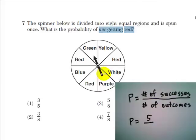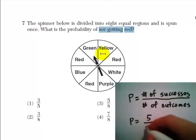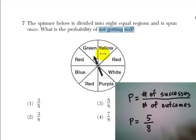Well, how many things could happen? Well, we could land on any of these eight spaces. So there are a total of eight possible outcomes. So the probability of not getting red is 5 over 8, or answer choice 3.